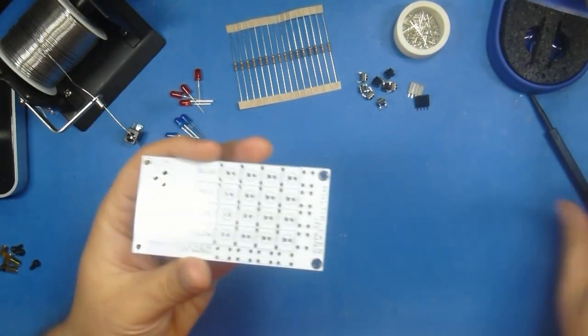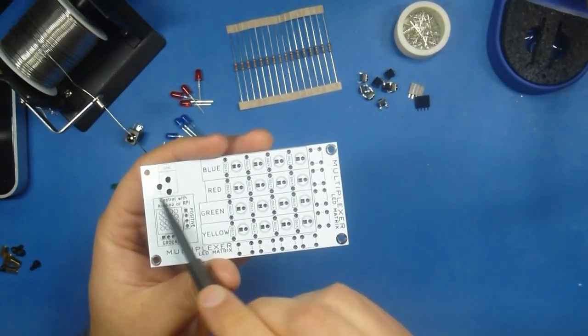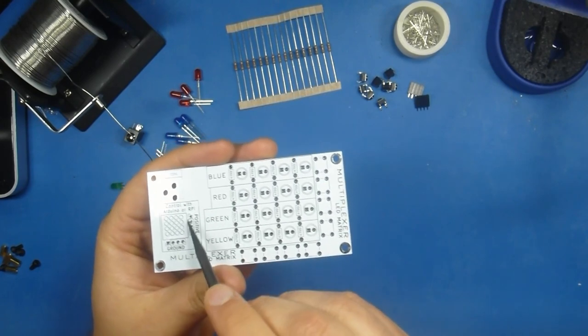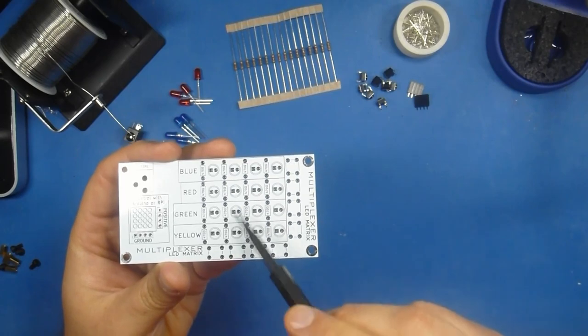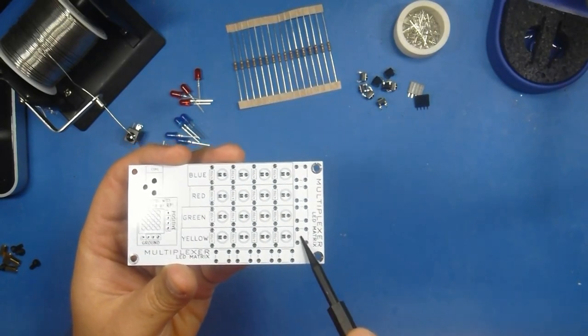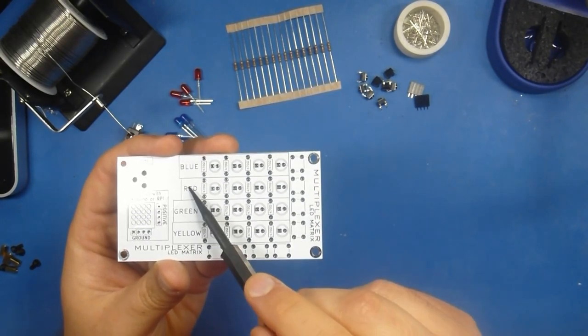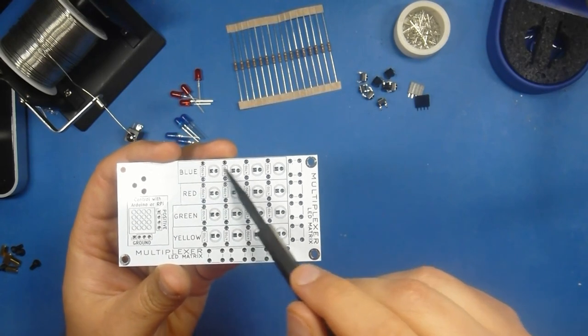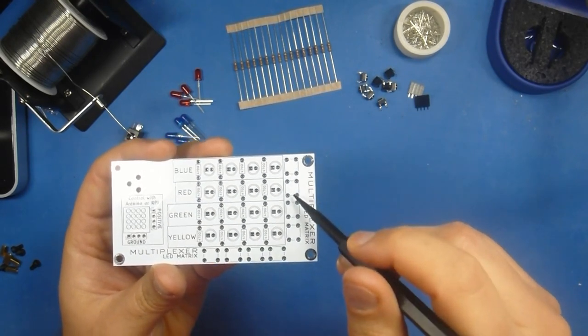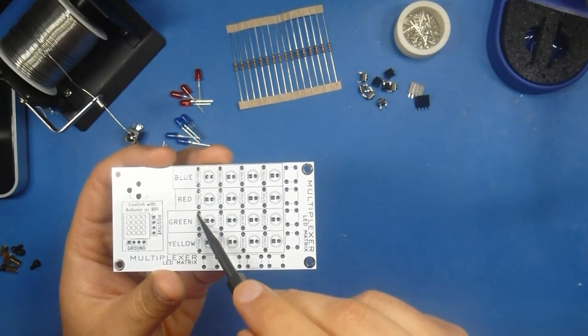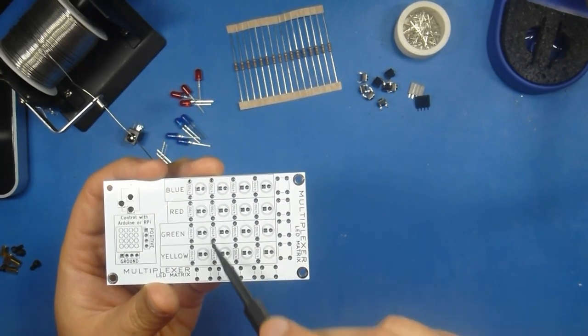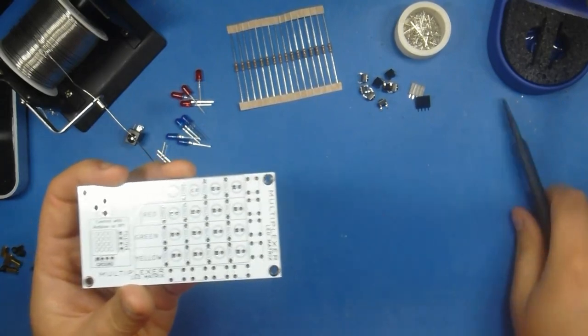All right, got a clear work surface, got some solder, got a soldering iron. Let's take a look at our board. We've got a spot for our barrel jack connector, our four by one headers, all of our LEDs. These are grouped by color, so blue at the top, then red, then green, then yellow. We've got spots for all eight tack switches around the edge, and all 16 of our resistors.